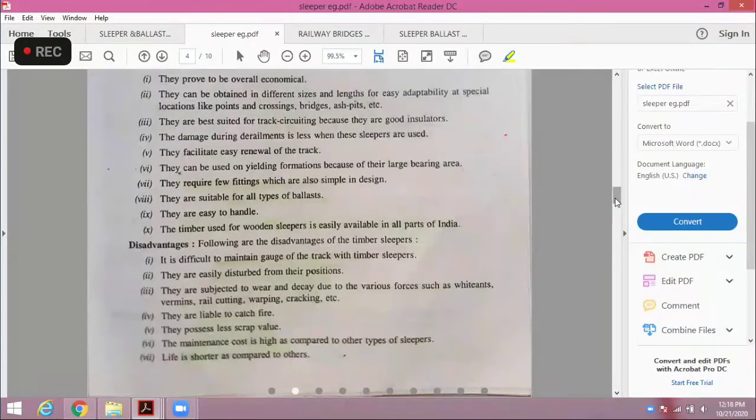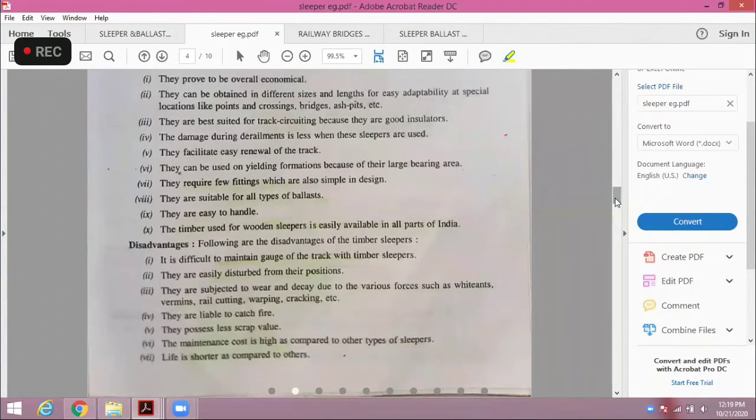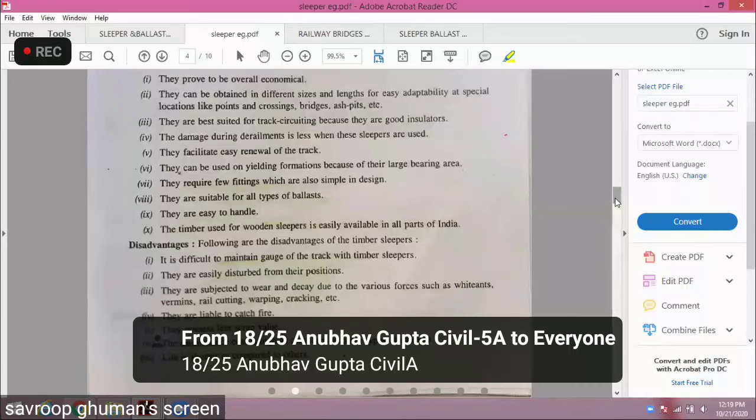The disadvantages: the wooden material is susceptible to insects and decaying. Either due to rainy season it will decay, and then the vermin's act. So there is danger. The material can decay and decompose and then there is fire hazard. One thing is scrap value - if the material is discarded, there is no scrap value of wood. Maintenance cost is quite high because it very quickly decays in comparison to concrete, in comparison to cast iron or in comparison to steel. Its life is shorter in comparison to steel or cast iron. These are basic disadvantages.